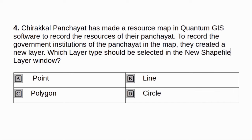Charakkal Panchayath has made a resource map in QGIS software to record the resources of their panchayath. To record the government institutions of the panchayath in the map, they created a new layer. Which layer type should be selected in the new shape file layer window? A. Point. B. Line. C. Polygon. D. Circle. Answer: A. Point.